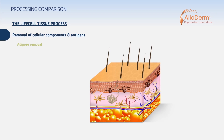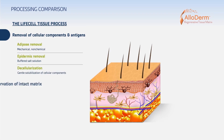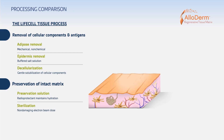As a quick review, Alloderm is produced with a proprietary combination of source material, processing regimen, and sterilization procedure, resulting in an intact matrix that is positively recognized and supports regeneration, as shown in preclinical models.